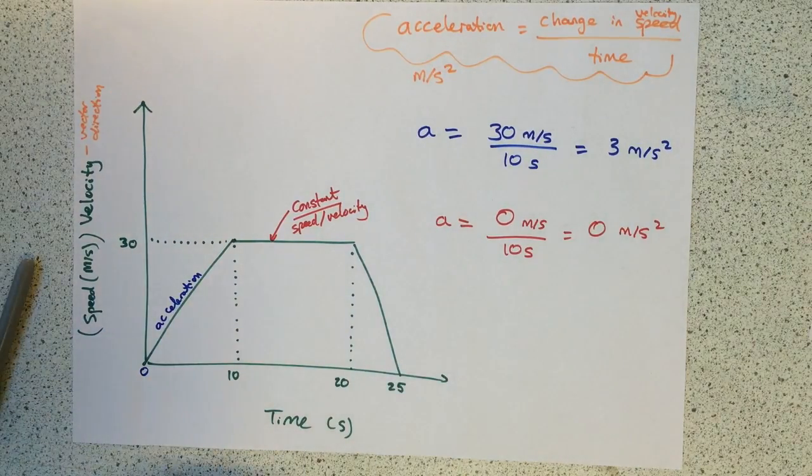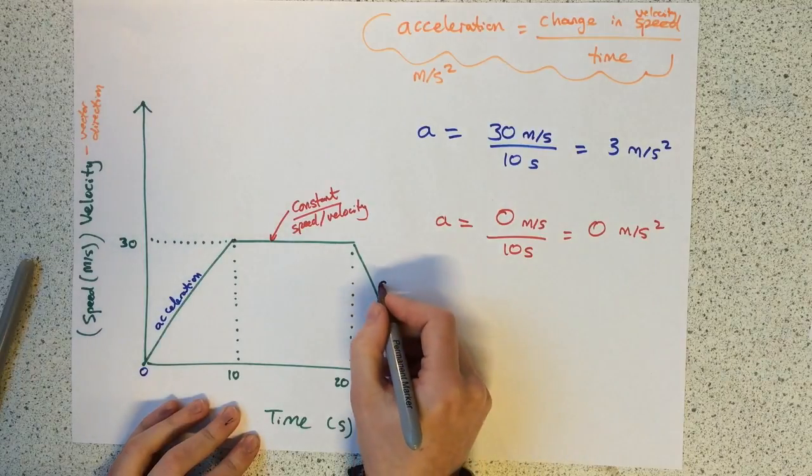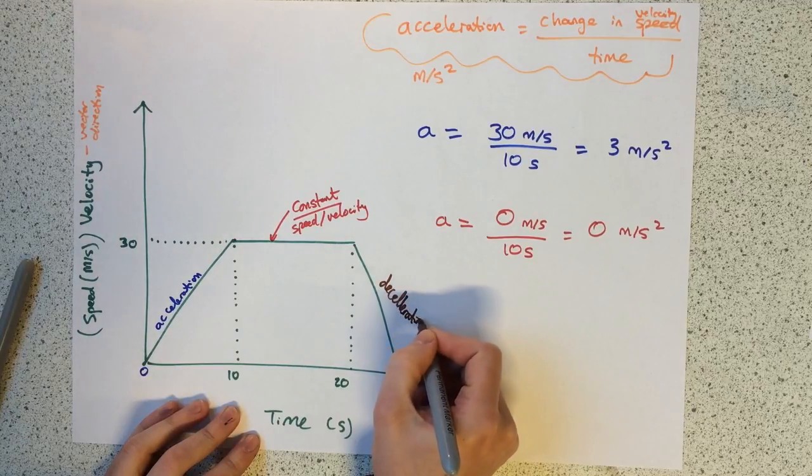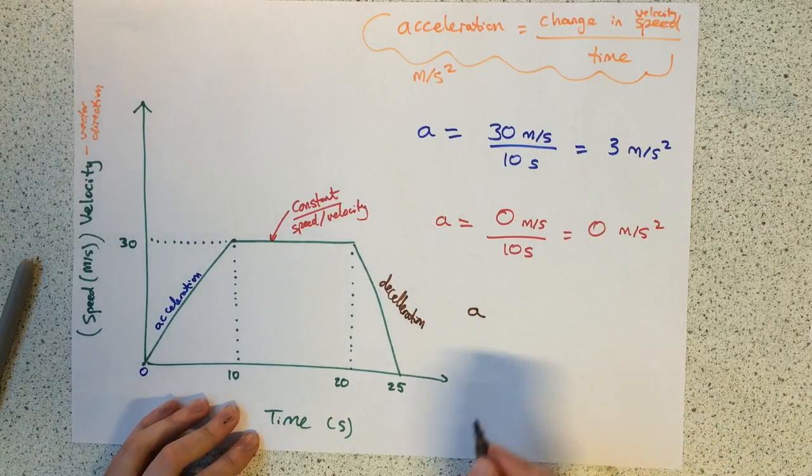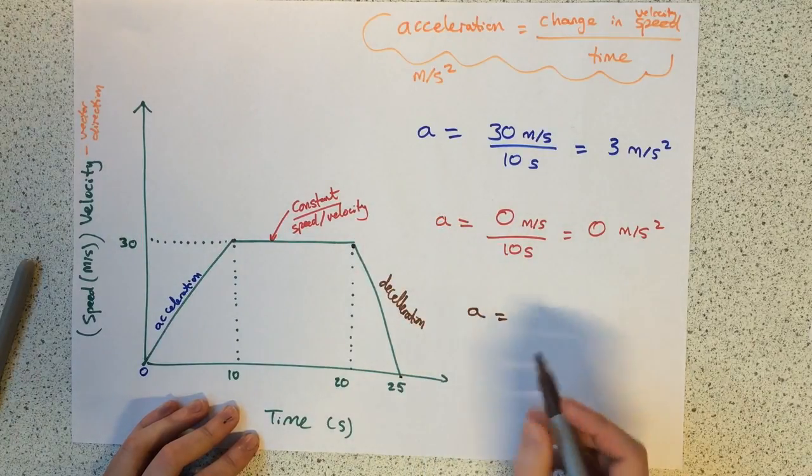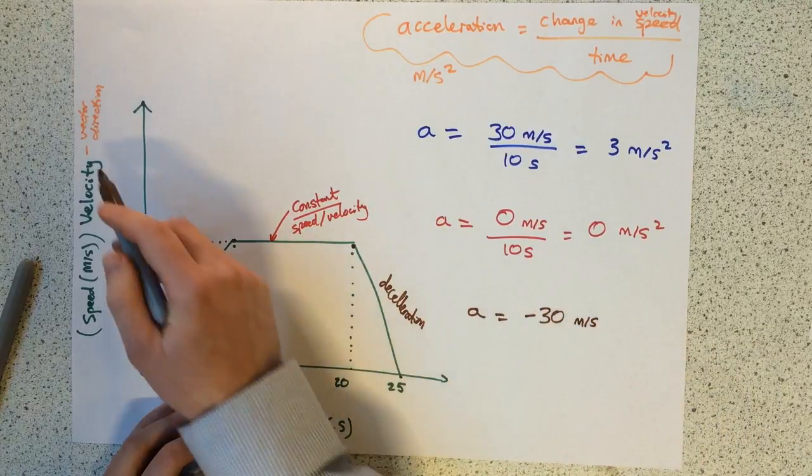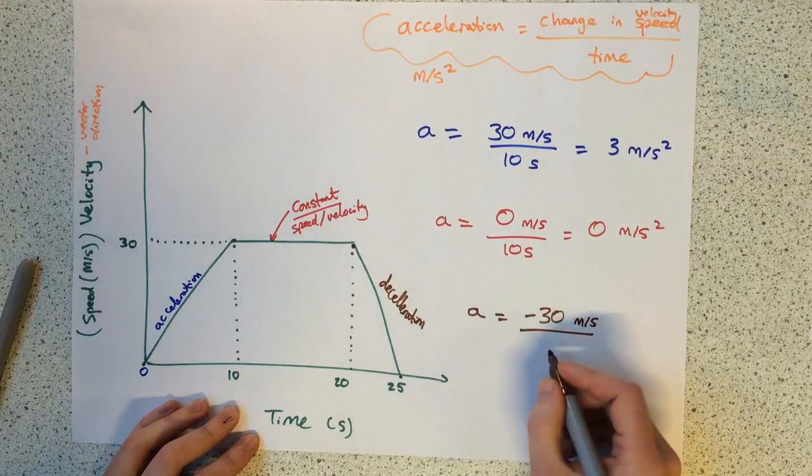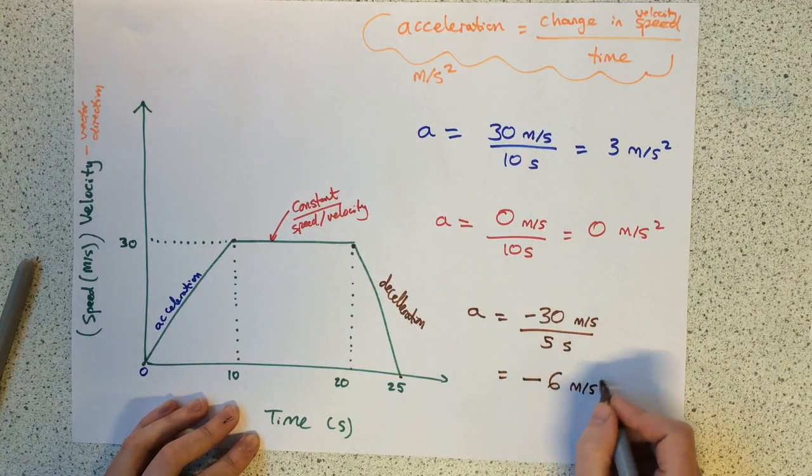Last section. The speed is decreasing, it's gone down to 0, so we call this deceleration. Can we work out the acceleration or the deceleration of this point here? The change in velocity starts at 30 and goes down to 0, so the change in velocity is minus 30 metres per second. Remember, this is a directional vector, so deceleration is negative change in speed. The time taken was 5 seconds. Therefore, the acceleration is minus 6 metres per second squared.